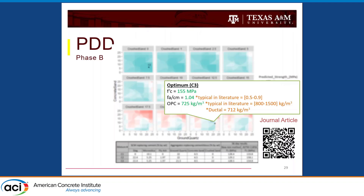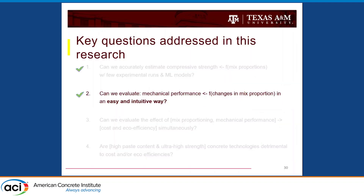During my PhD, I used these tools to create a UHPC mix with 155 MPa compressive strength with more sand than cementitious materials and an OPC content of 725 kg/m³ — which, based on my literature search at the time, was below what is typically reported.